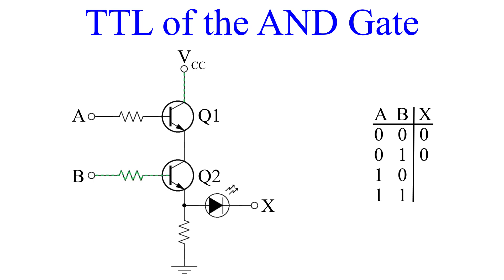Now we switch it up and apply a voltage to A, but not to B. Q1 is now forward biased, and current can flow to the collector of Q2, but because Q2 has no base voltage, this transistor remains off, and there is no output. So for inputs A equals one and B equals zero, the output is zero.